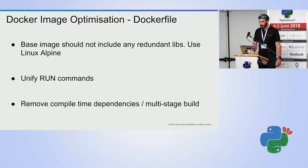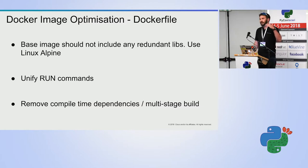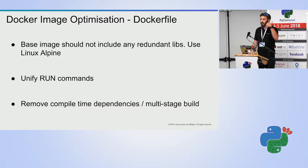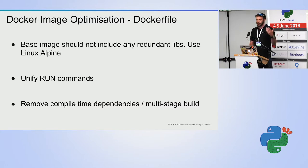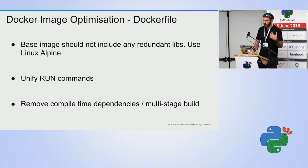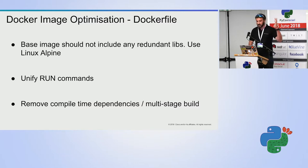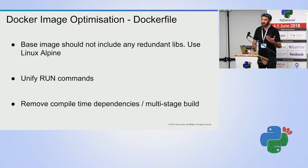Regarding RUN commands — most people who know Docker understand that each line in the Dockerfile is a layer. When you unify RUN commands, the odds that the cache will be invalidated and that a specific dependency will be reinstalled get smaller. If you have fewer RUN commands, you have fewer layers, which means a leaner image and shorter build time because the odds of a layer being invalidated are reduced.